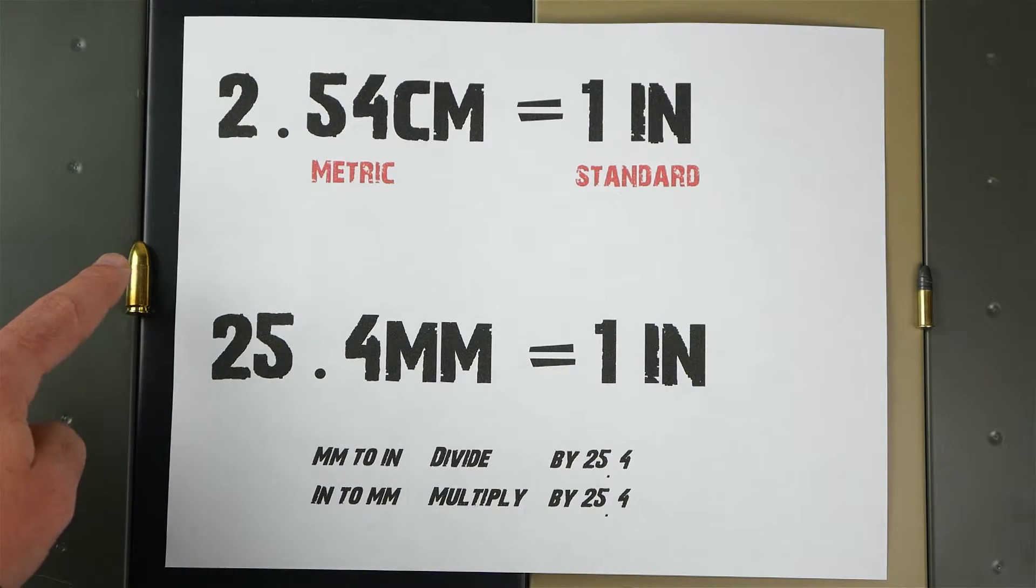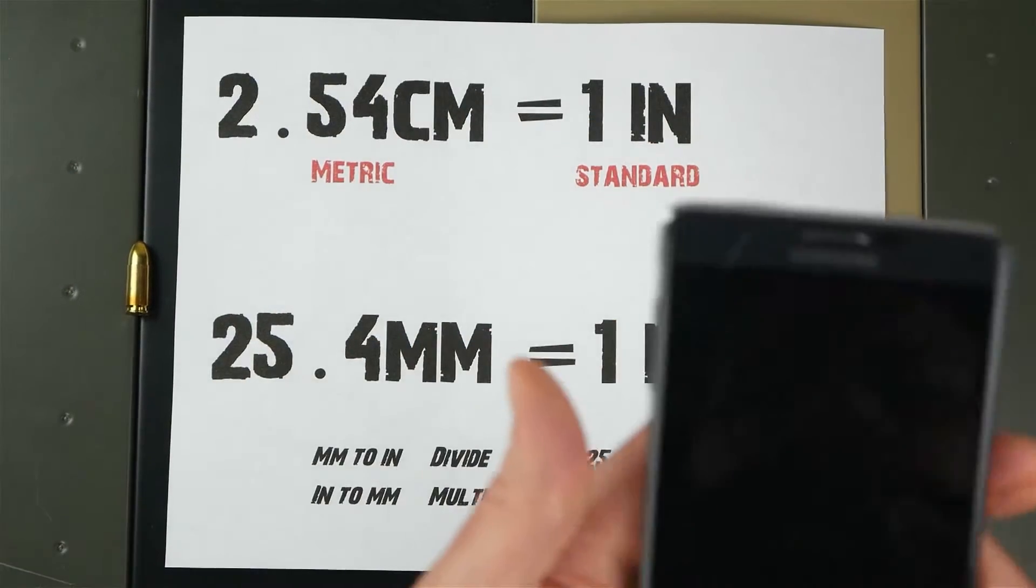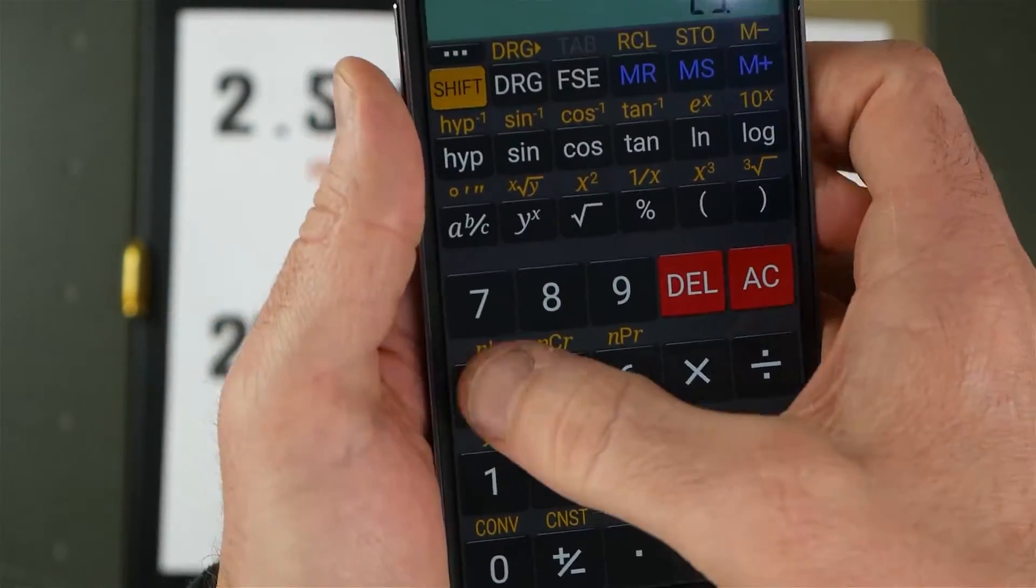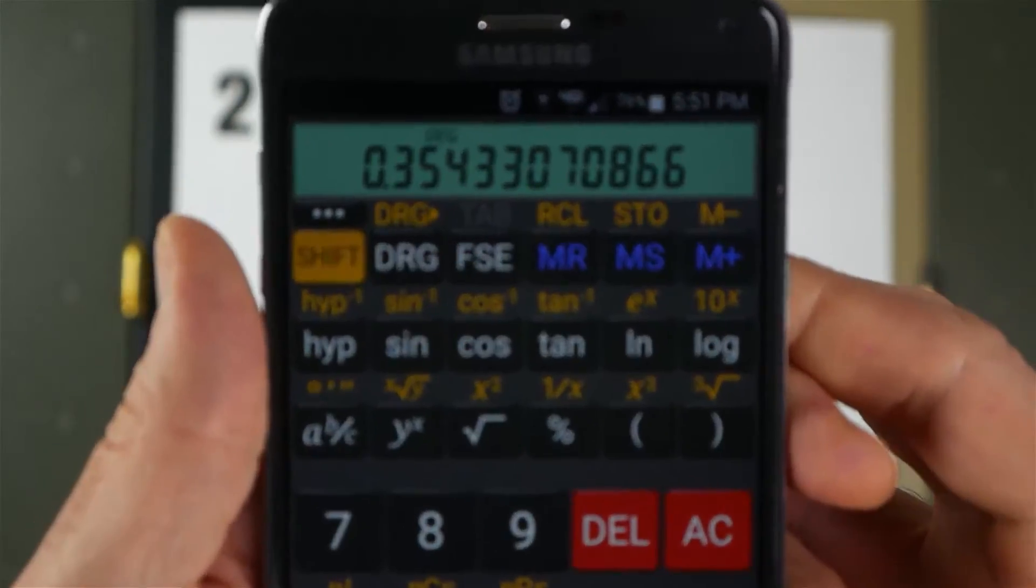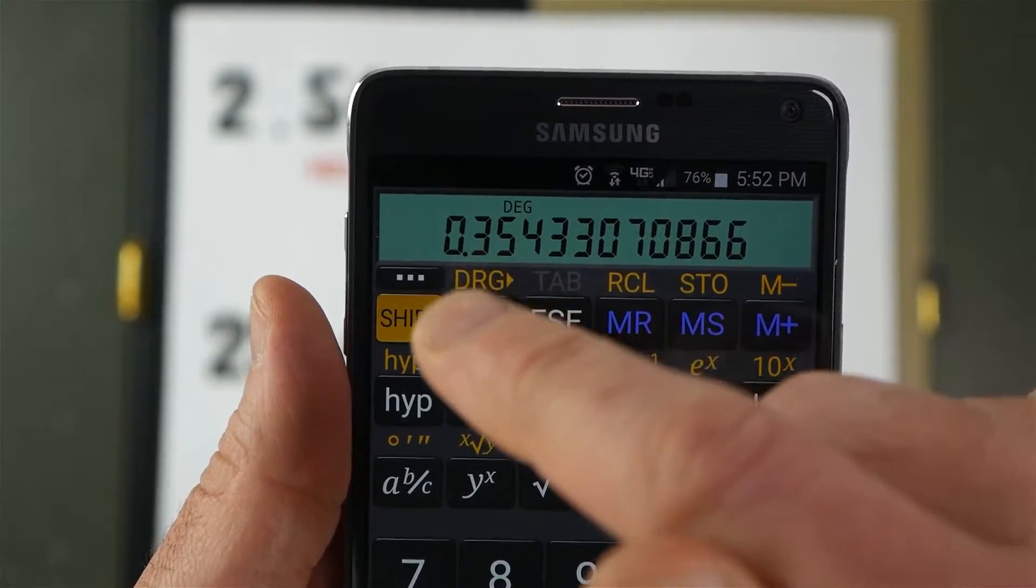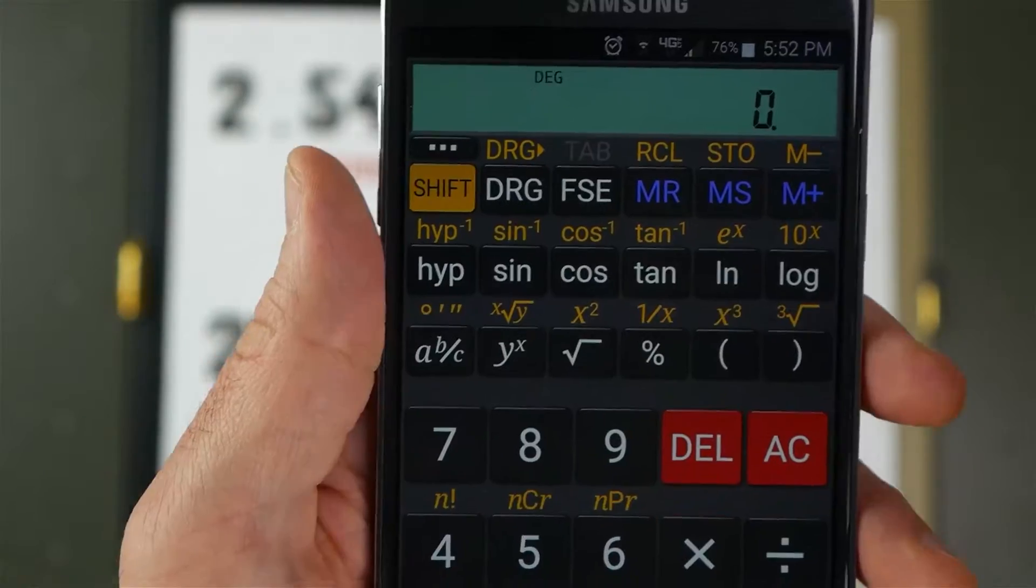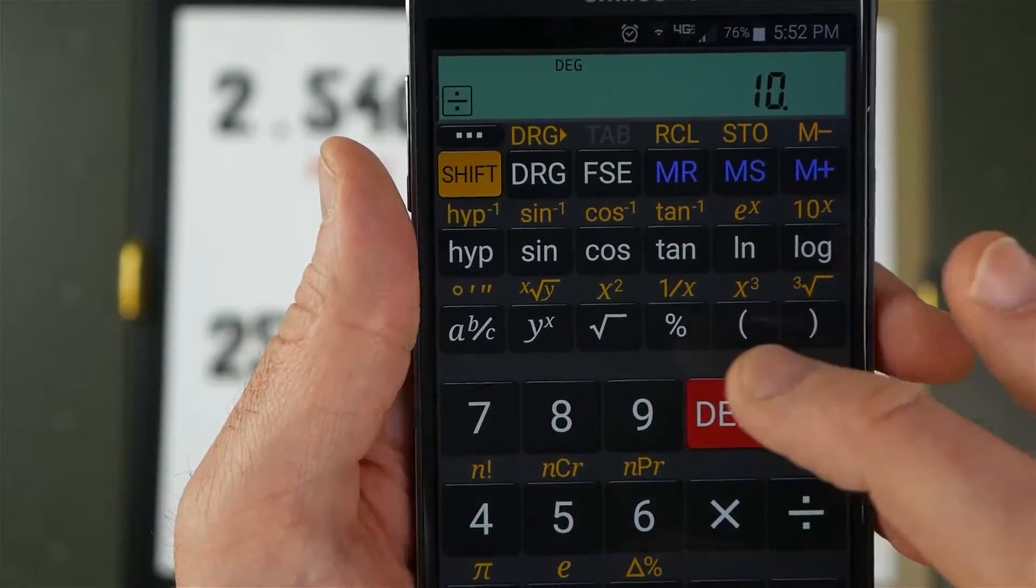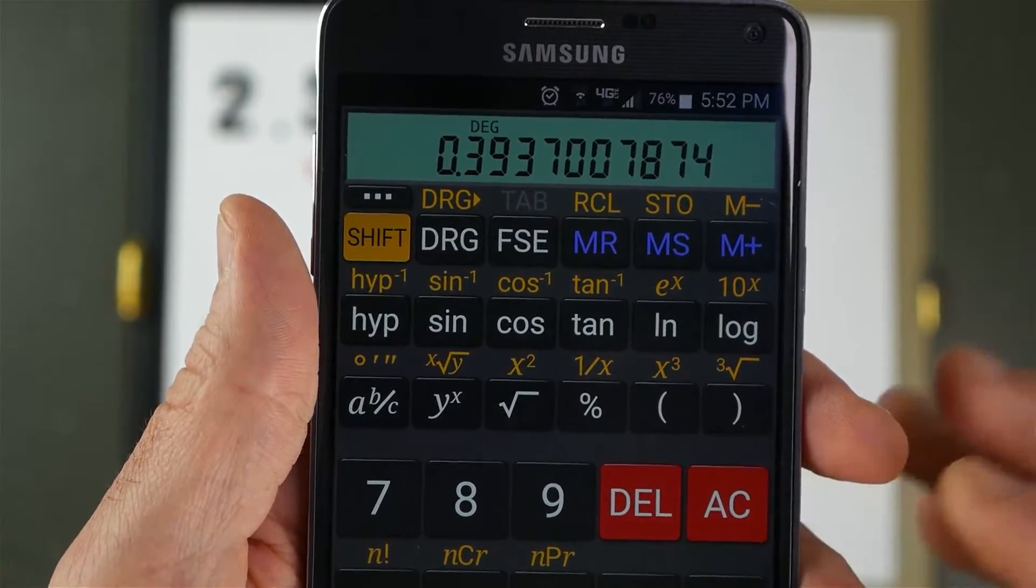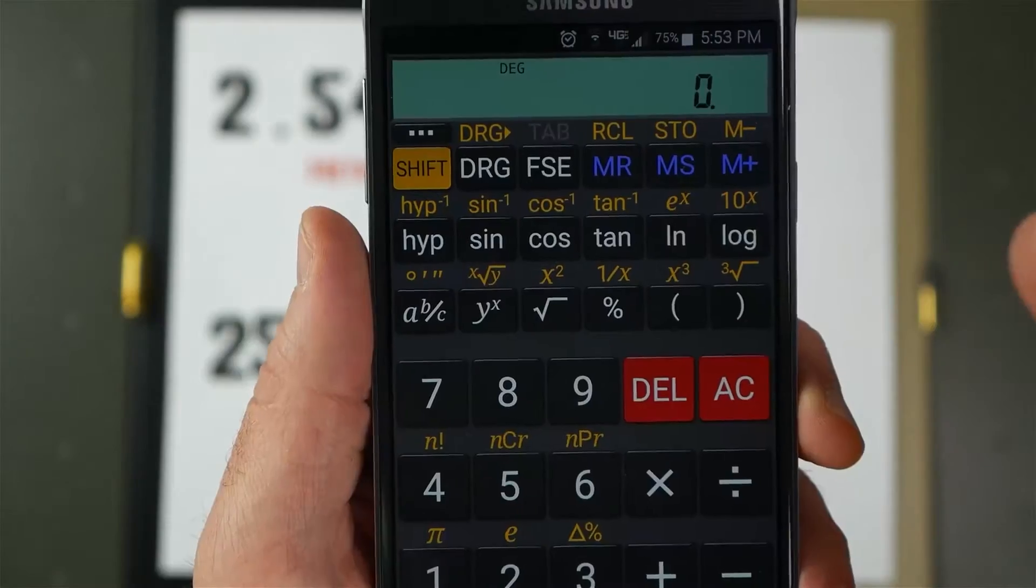I'm going to take nine and divide that by 25.4. That tells me that nine millimeter is the same thing as basically a .35 caliber—0.354 of an inch. If you had 10 millimeter, divide that by 25.4. That tells you it's about a .39, .393, so it's close to a 40 caliber.